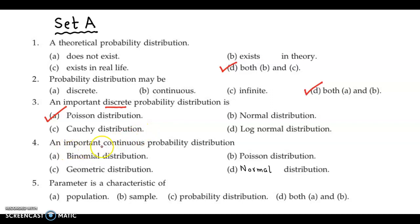Next one, an important continuous probability distribution is. The binomial, Poisson, and geometric distributions are discrete. So the only left out option is option D. So the continuous probability distribution out of these is option D, the normal distribution.